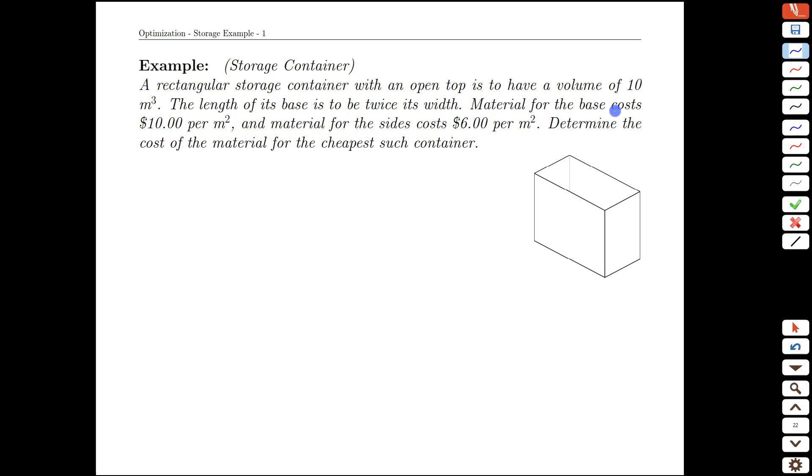And we also have something about costs. The material for the base is more expensive at $10 per square meter, whereas the sides are a little less expensive at $6 per square meter. Determine the cost of the material for the cheapest such container. And another option on this would be to find the dimensions of such a container. We are likely going to come up with that along the way as well.